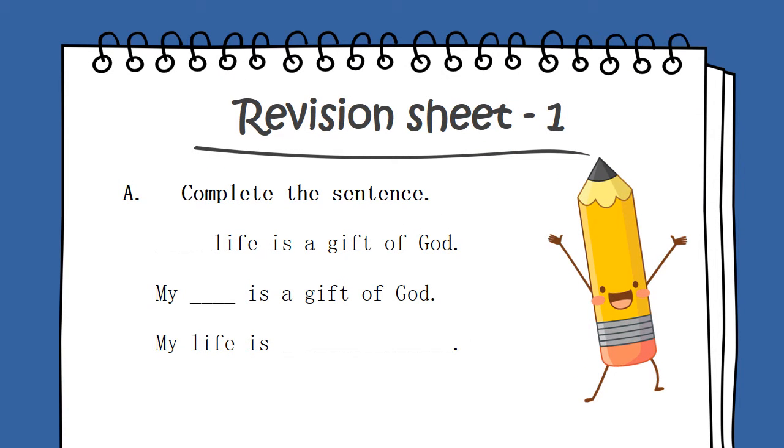This was the summary of our chapter. Now, let's do its exercise. Firstly, we have given a question. It is complete the sentences. Our first sentence is dash life is a gift of God. The question asks, Whose life is a gift of God? Yes, my life, our life is a gift of God. So, the answer is My life is a gift of God.